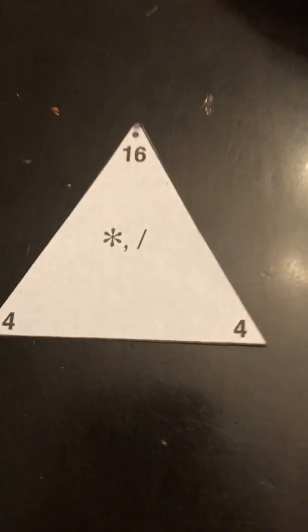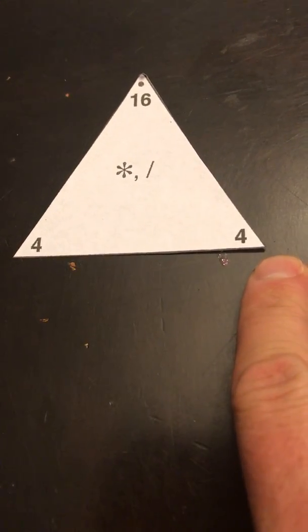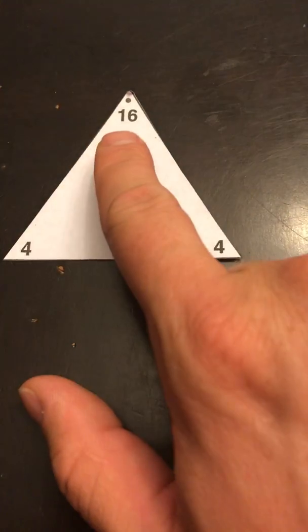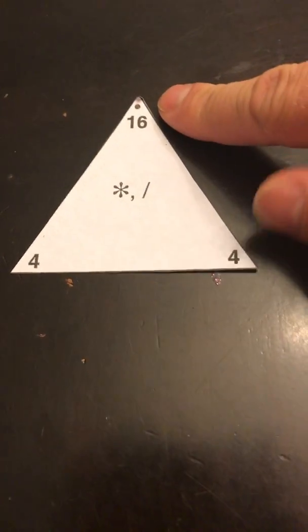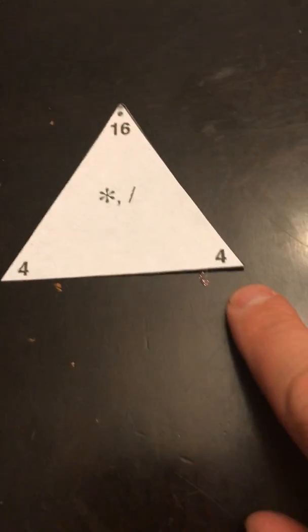What you notice here is that on each of the fact triangles we've got 16, we got 4, and then we've got 4. So we could see 4 times 4 is 16, 16 divided by 4 is 4, and likewise 16 divided by 4 is 4.